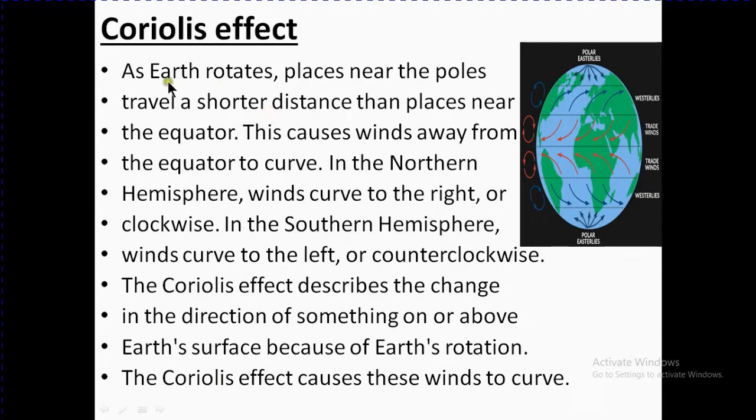Coriolis effect: As Earth rotates, places near the poles travel a shorter distance than places near the equator. This causes winds away from the equator to curve. In the northern hemisphere, winds curve to the right, or clockwise.